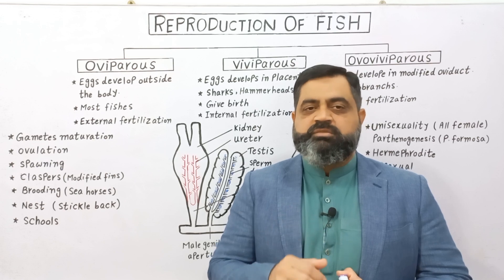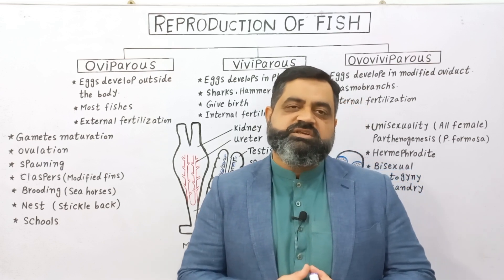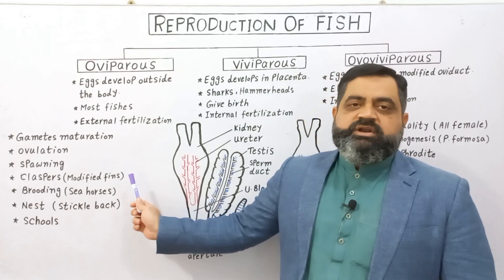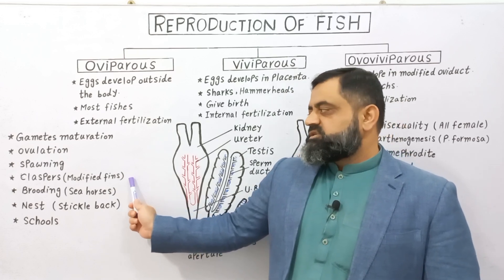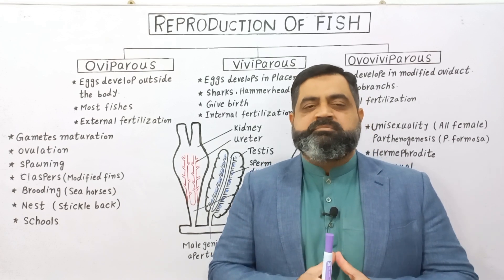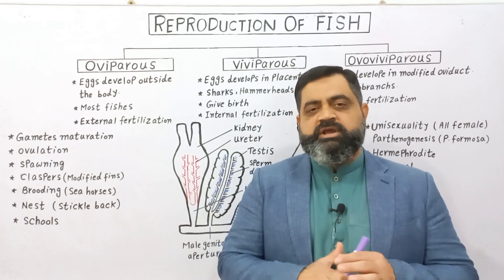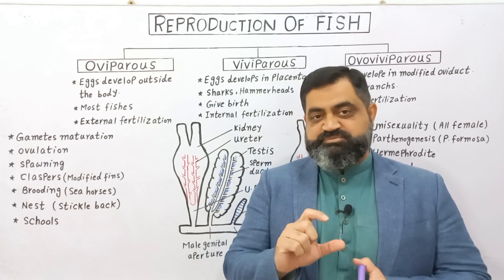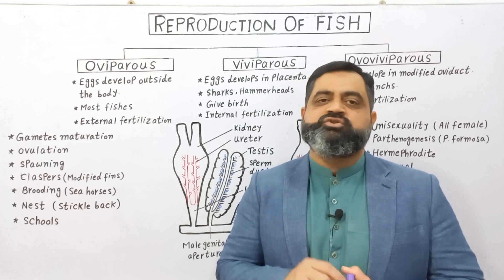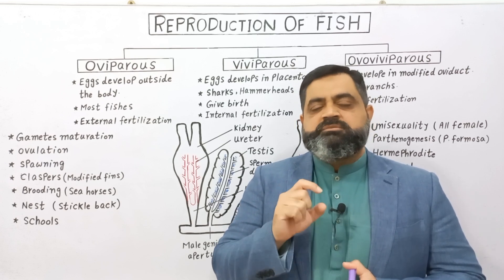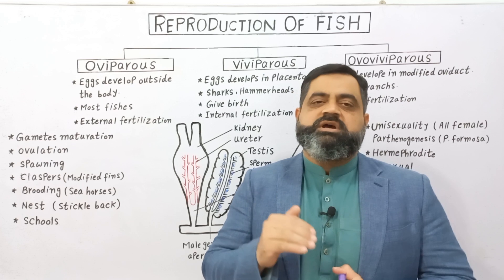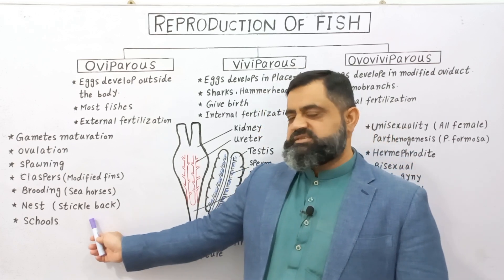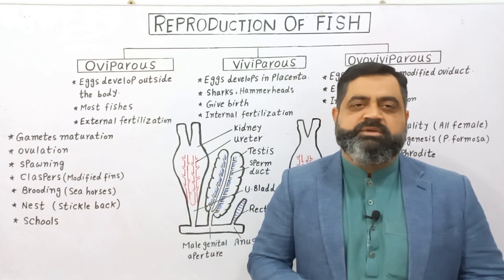When we talk about internal fertilization, there are certain modified fins present on the ventral and posterior side of the body known as claspers, which have specialized grooves through which the male releases sperms inside the body of the female fish. Some fishes also make nests — like the three-spined stickleback fish.